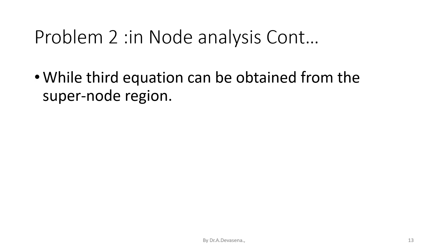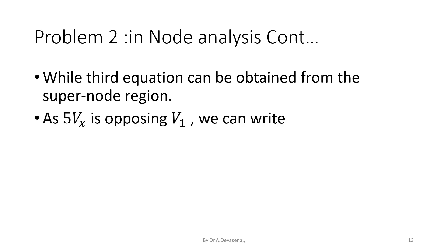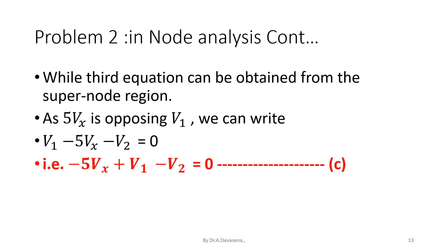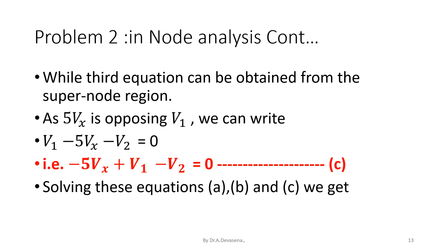The third equation can be obtained from the supernode region. As 5Vx is opposing V1, we can write V1 minus 5Vx minus V2, that is equal to 0. That is, minus 5Vx plus V1 minus V2 is equal to 0. Consider this as equation C. Now, solving equations A, B, and C, we get the value of V suffix x is equal to 4.3636 volts. This is the answer.